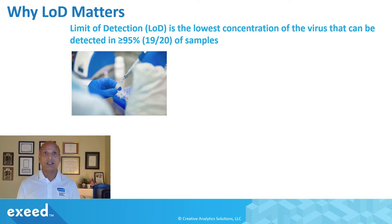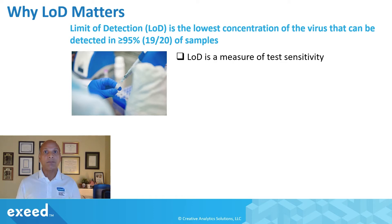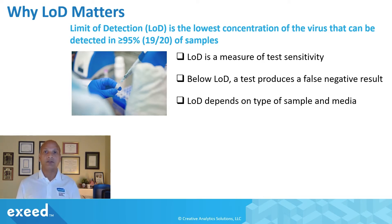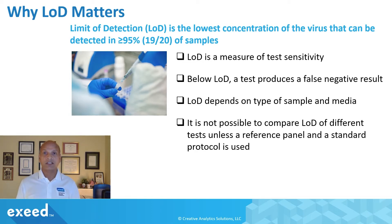Why does LOD matter? The limit of detection is the lowest concentration of the virus that can be detected in greater than or equal to 95% of samples — for example, 19 out of 20 should be detectable if confirmed positive. LOD is a measure of analytical sensitivity, as compared to clinical sensitivity, which is different. Below LOD, a test produces a false negative result. LOD depends on the type of media and sample used, which is why it has been very difficult to compare LOD across different tests.